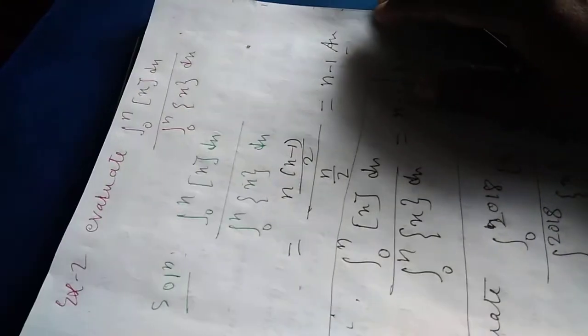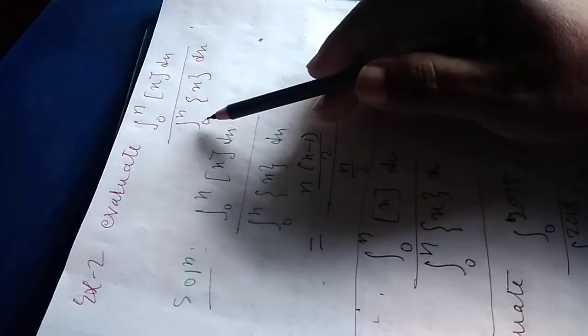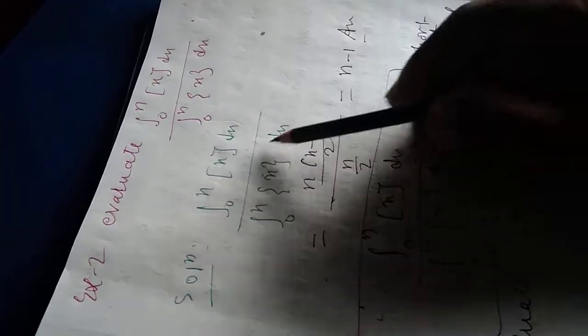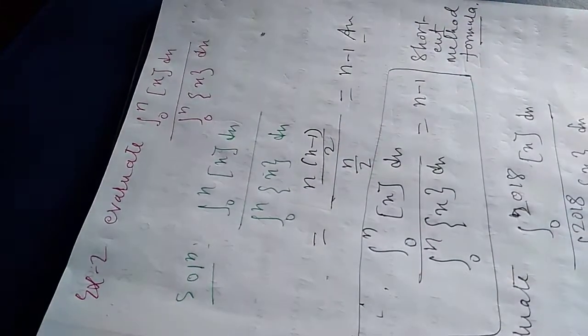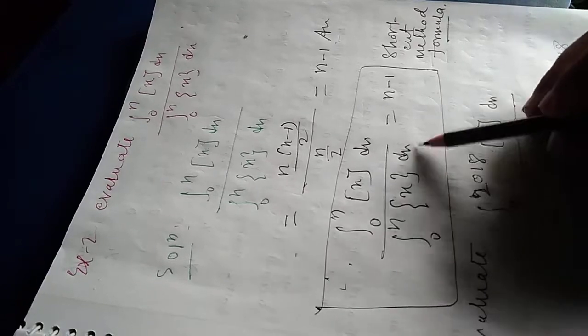Now, what is the relation between fractional part of X and integral part of X? The question, taken from a university exam paper, is: evaluate the integral from 0 to N of integral part of X dx divided by the integral from 0 to N of fractional part of X dx. The solution: the numerator is N(N−1)/2 and the denominator is N/2. The N/2 cancels, giving N−1. Therefore, the integral from 0 to N of integral part of X divided by the integral from 0 to N of fractional part of X equals N−1.